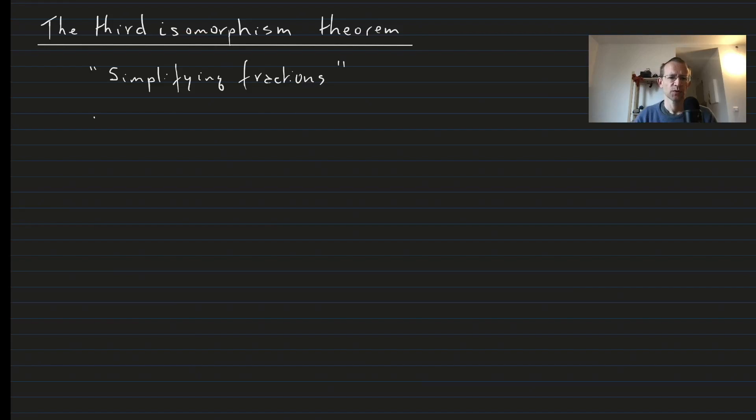So let's suppose that we have N, a subgroup of K, a subgroup of a group G. Let's suppose that N and K are normal subgroups.